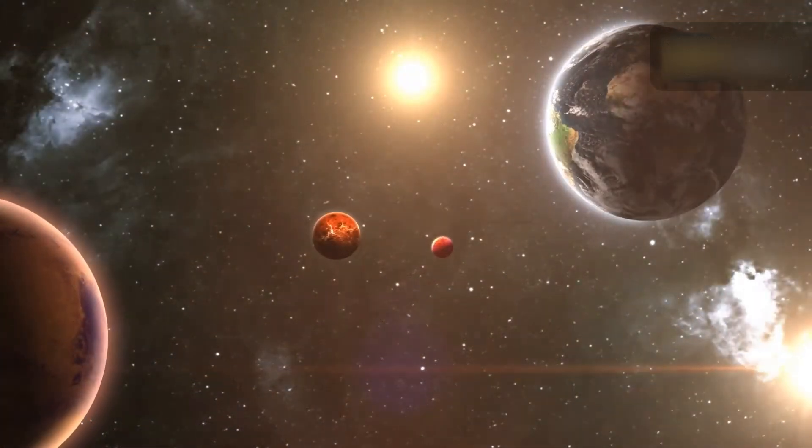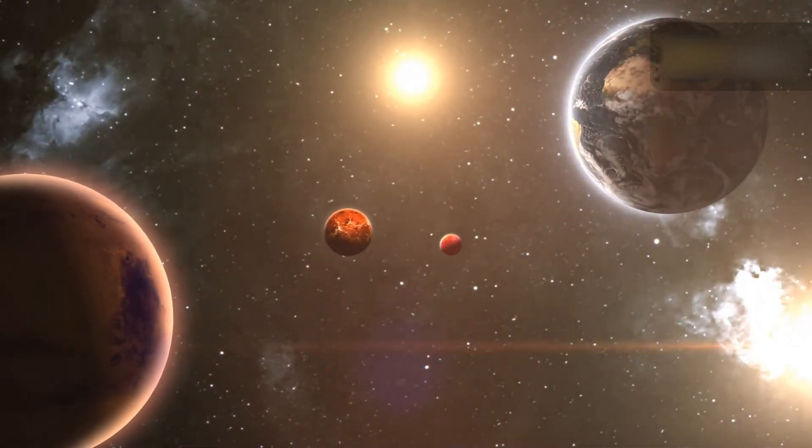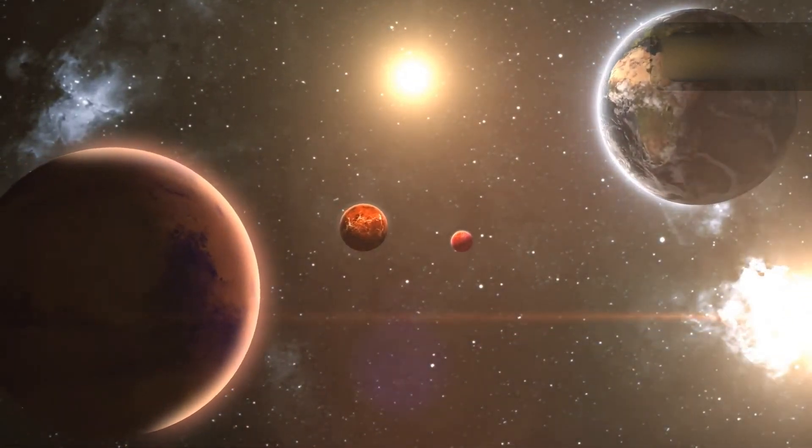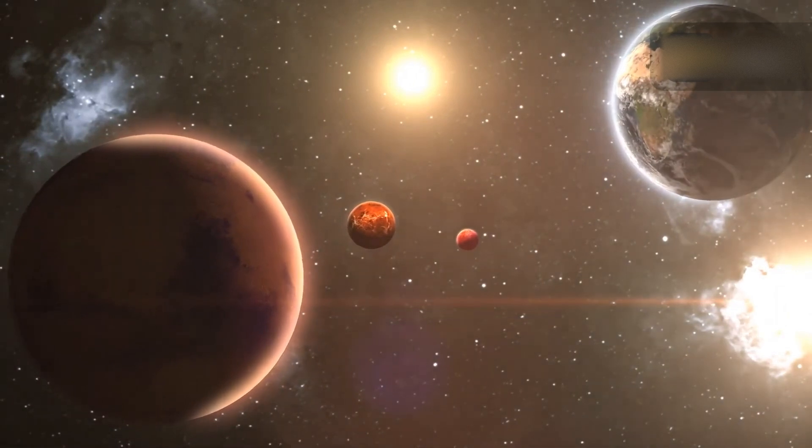Mercury, the smallest planet in the solar system, has a comet-like tail composed primarily of sodium ions dispersed from the planet's surface by impacts from micrometeors and the solar wind.